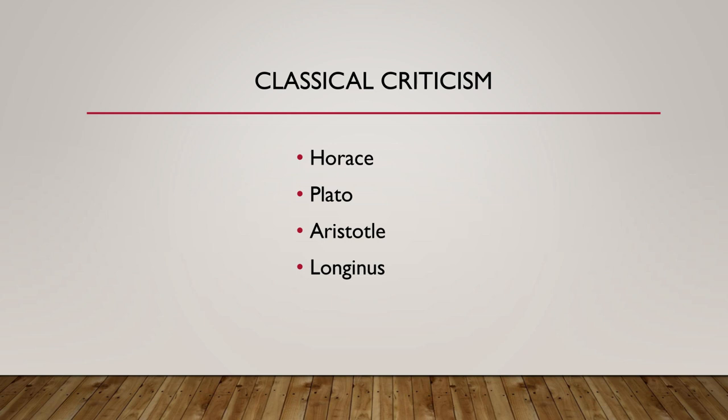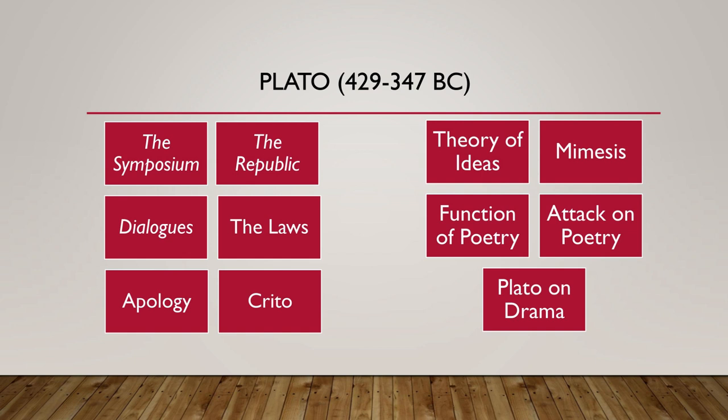In today's session we will be looking at classical criticism as well as English criticism up to the Victorian age. Classical criticism begins with none other than Plato, the philosopher turned poet, who has got many diverse and even contradictory views about the very nature of literature.